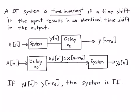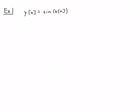This definition can seem a little abstract until we try a couple of examples. The first example we'll look at is y(n) = sin(x(n)), meaning the output of the system is simply the sine of whatever the input sequence is.